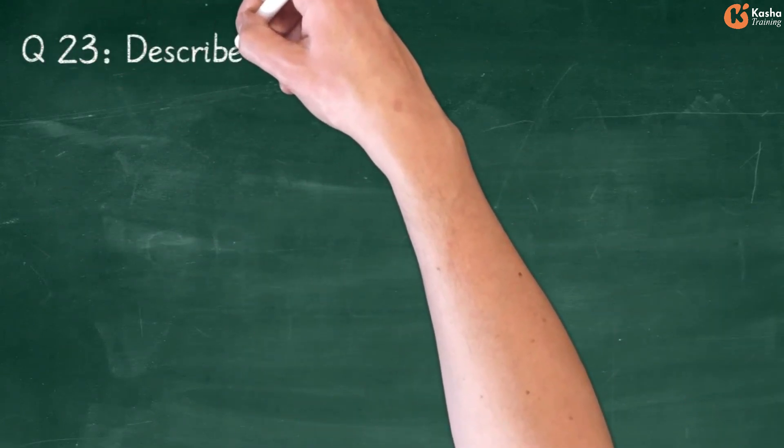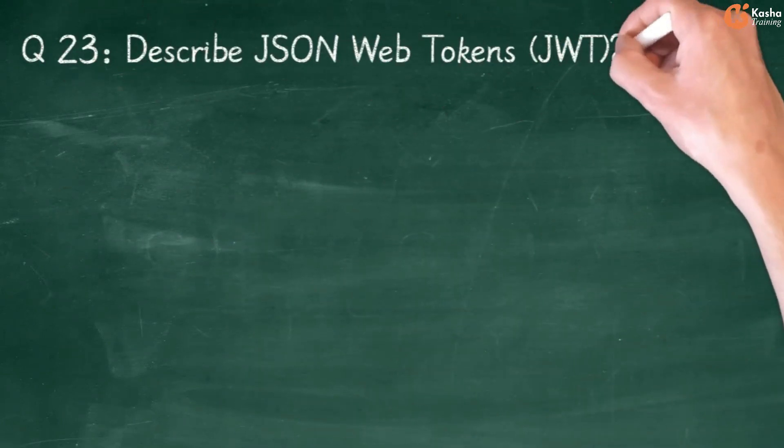Question 23: Describe JSON Web Tokens (JWT).